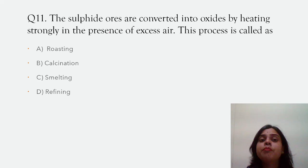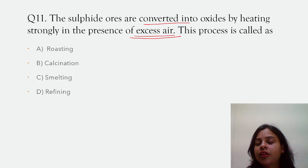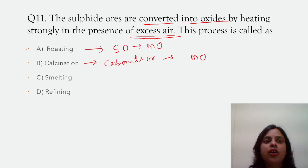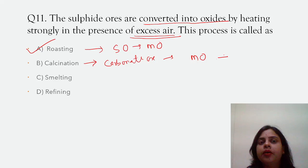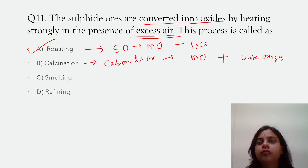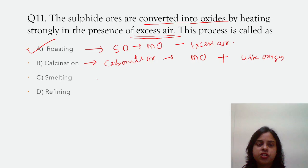Sulphide ores are converted into oxides by heating strongly in the presence of excess air. We have already discussed two processes of converting ore into metal oxide: roasting and calcination. In calcination, we convert carbonate ore to metal oxide, and we heat the ore in the presence of little air or in absence of air. In roasting, we use excess air. So the correct answer is roasting.